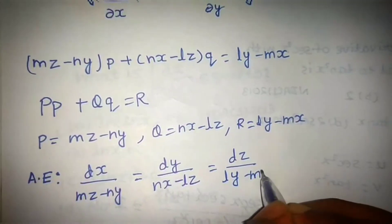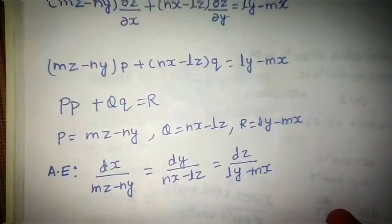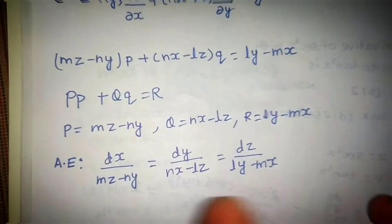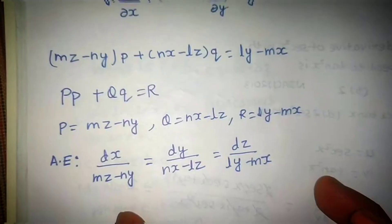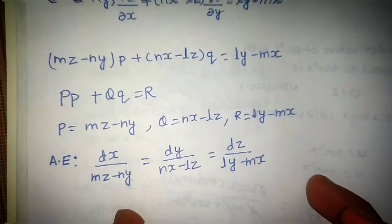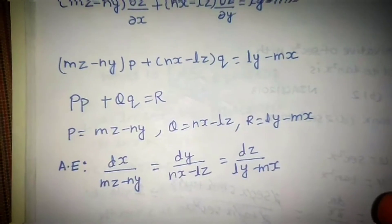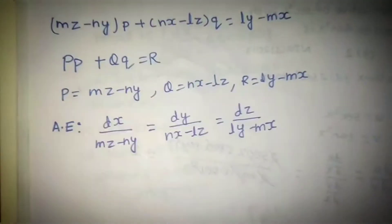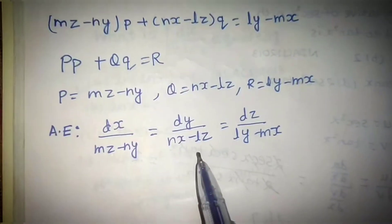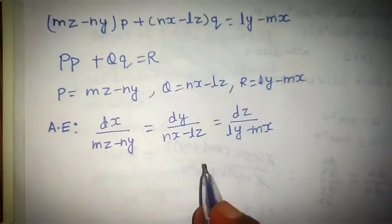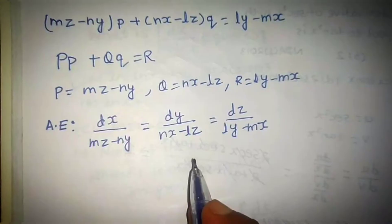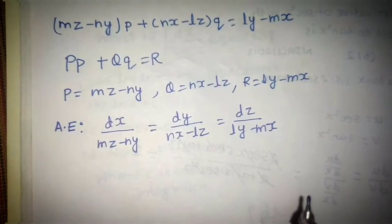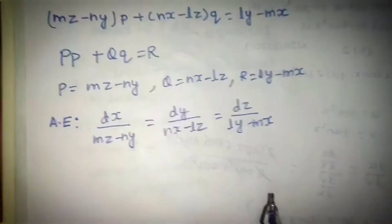Now this is the method of grouping. If you want to solve this, you can use method of grouping. The auxiliary equation is always solved by either method of grouping or method of multipliers, which is an extension of method of grouping. But if you want to solve this by method of grouping, you can easily see that we can't do that because this is an implicit function — you can't separate x, y, and z so that you can integrate.